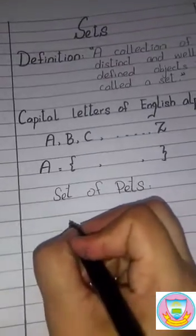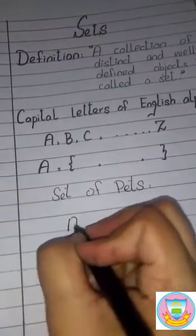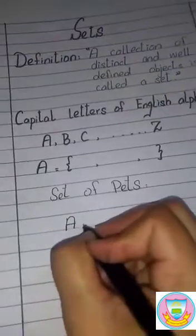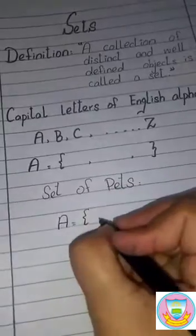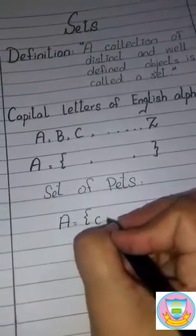To start this question, first use an English alphabet A, then equal sign and then bracket. Set of pets means pets, animals. First one is cat.